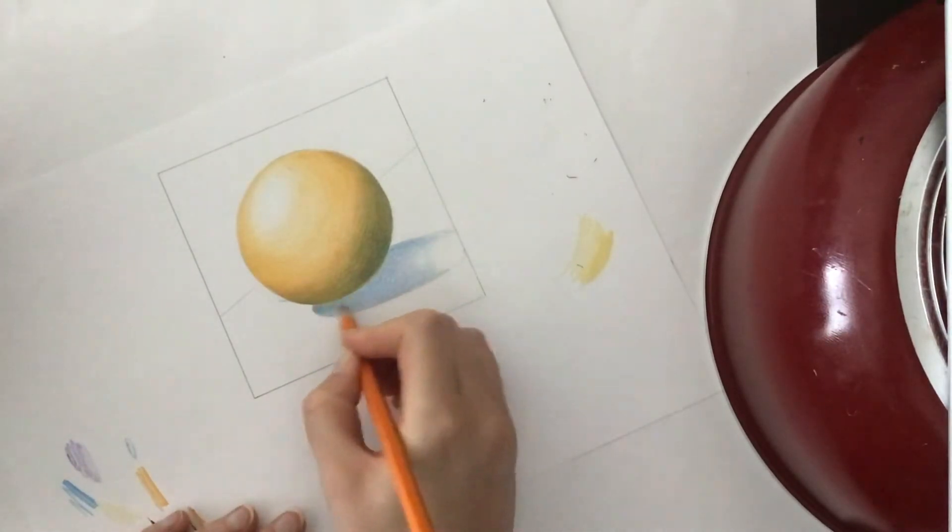The deep tones are complete so now it is time to go over with my hue colors. This is only my three orange colors.